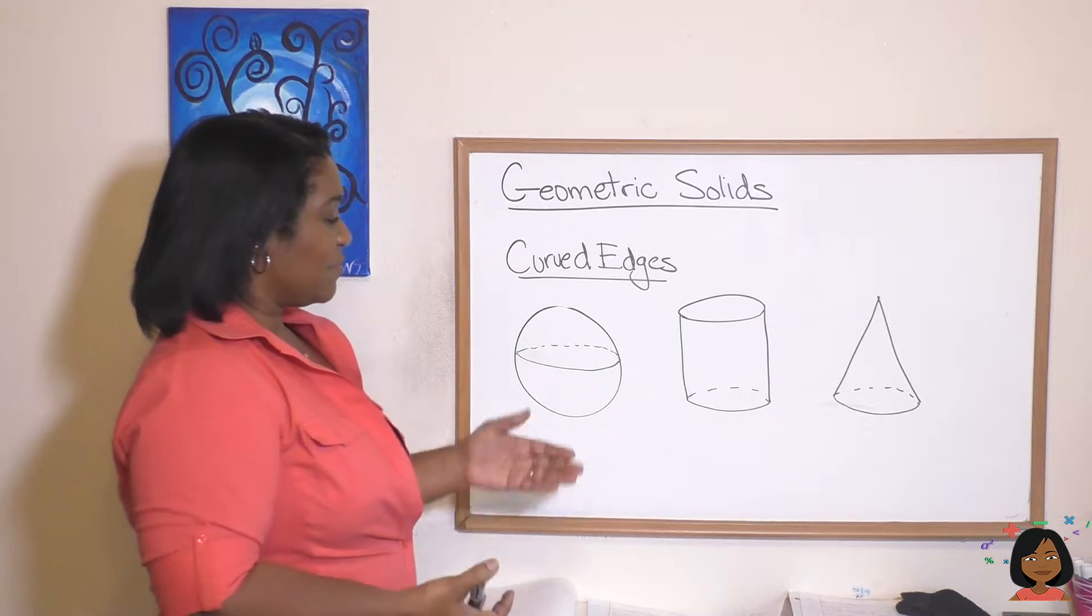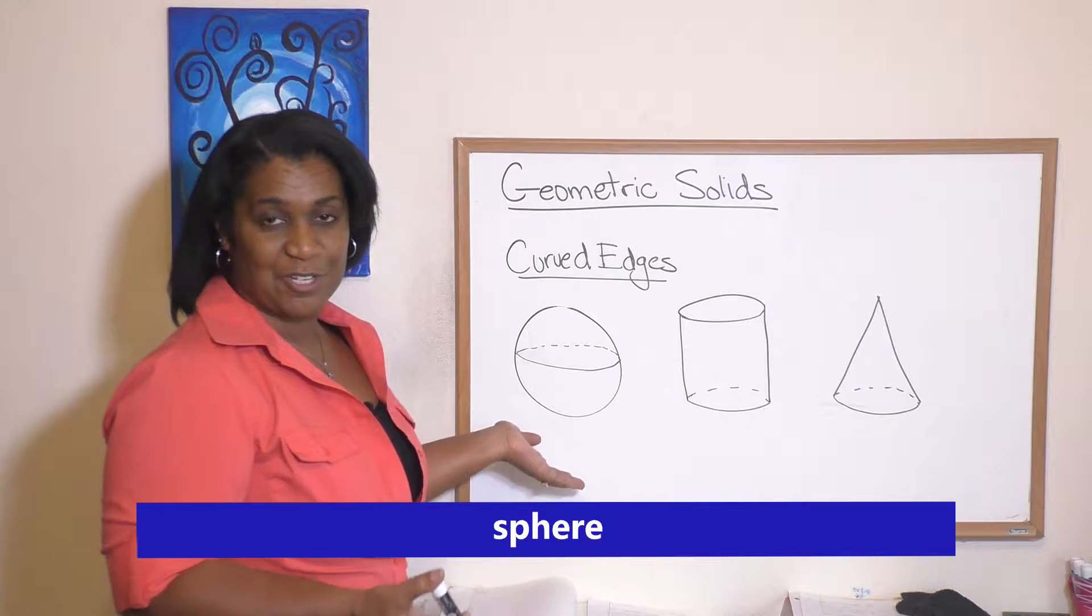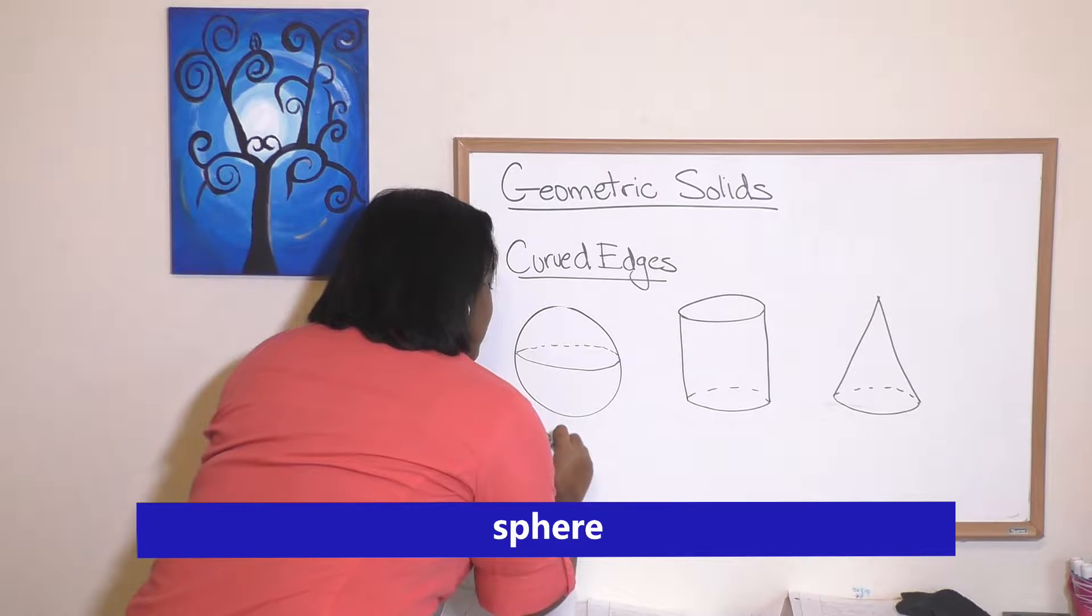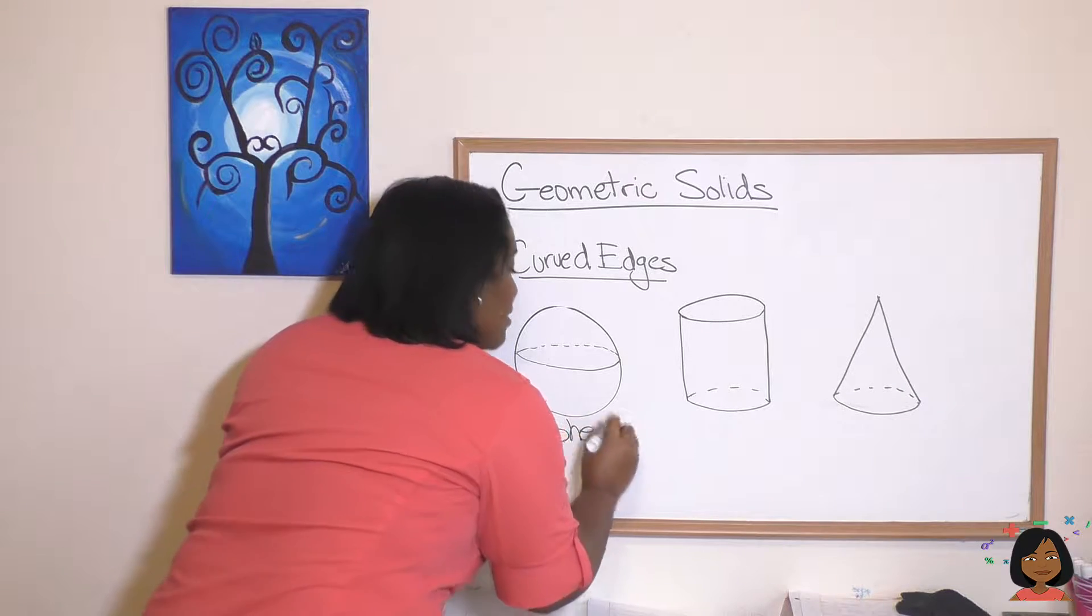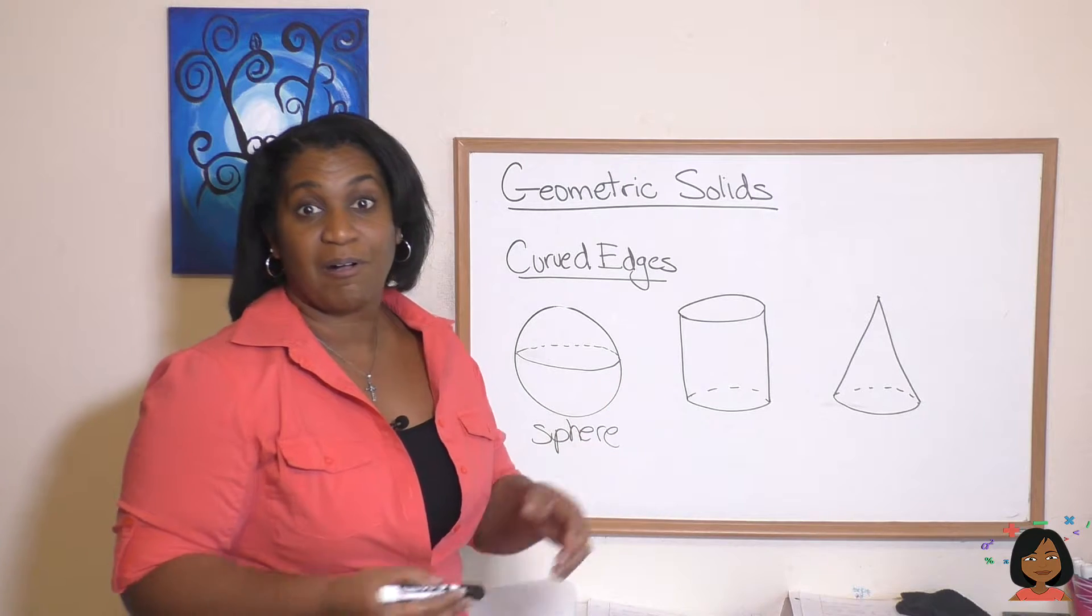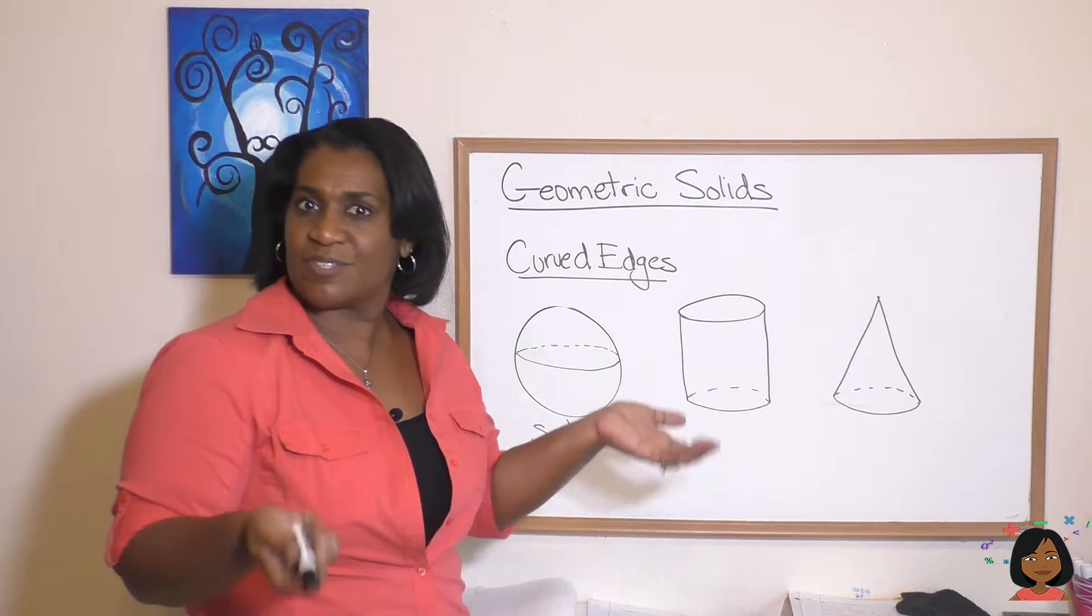So this is my first one I wanted to show you. We call this a sphere, and you know of a sphere, right? It's a three-dimensional circle. A sphere is a basketball, any round ball is a sphere.